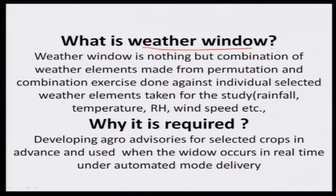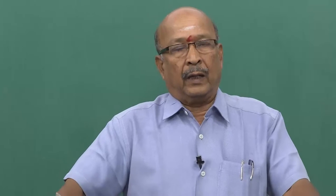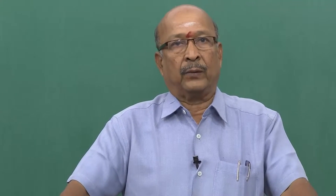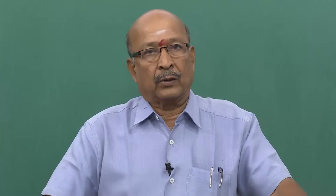We select weather elements for developing or generating weather windows. Those weather elements must have a higher impact on crop production or must pose a higher risk to crop production. For example, rainfall — if rain occurs, there is no problem; if rain does not occur, there is a problem. Likewise, maximum temperature, minimum temperature, cloud cover, mean relative humidity, and wind speed are considered for selecting the weather window. But in the Tamil Nadu case study, something different will be discussed later.